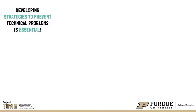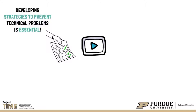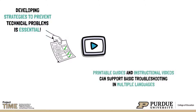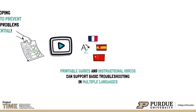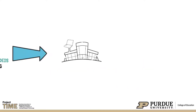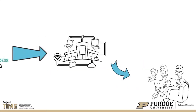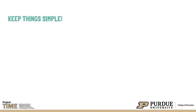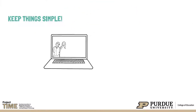Developing strategies to prevent technical problems is essential. It is helpful to provide how-to printable guides and instructional videos that support device and application usage and basic troubleshooting. These guides and videos can be translated into multiple languages to meet the needs of students and their families. It is important to keep all printable guides and instructional videos centrally located for students and families. Keeping things simple is another way to avoid major problems with technology.